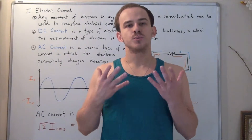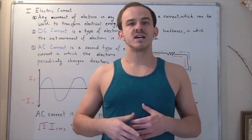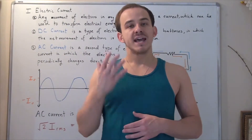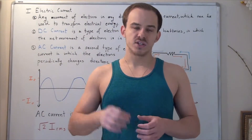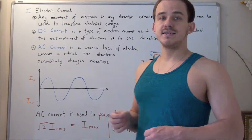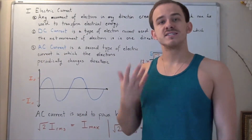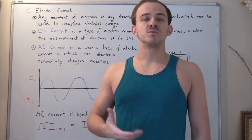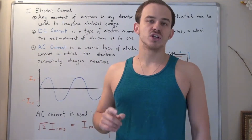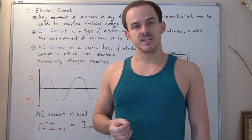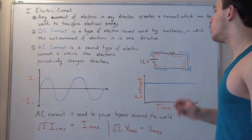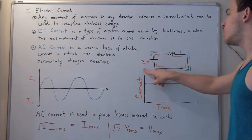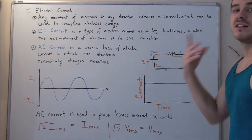In this lecture, we're going to briefly talk about two main types of electric currents known as DC currents, or direct currents, and AC currents, or alternating currents. Let's begin by looking at DC current. DC current is simply a type of electric current in which the net movement of electrons is in one direction. Things like batteries produce DC currents. Let's look at an electric circuit with one battery with a voltage of 12 volts and a resistor — a light bulb.